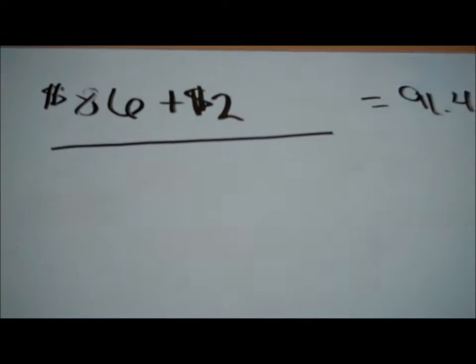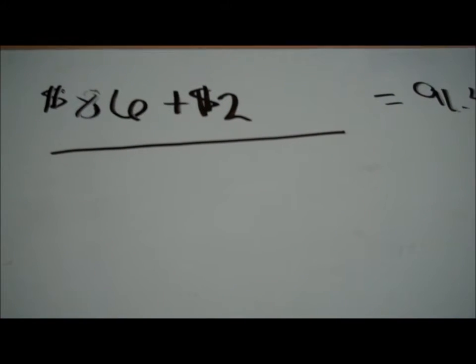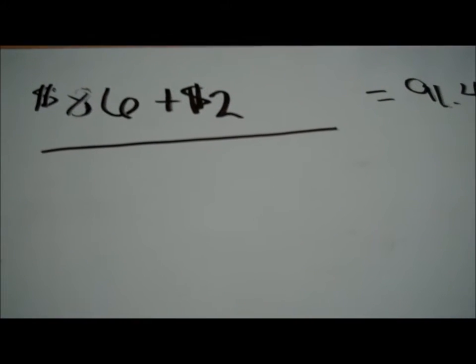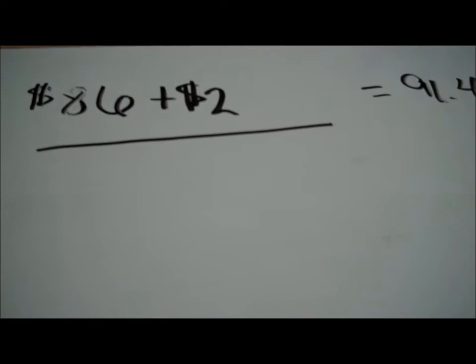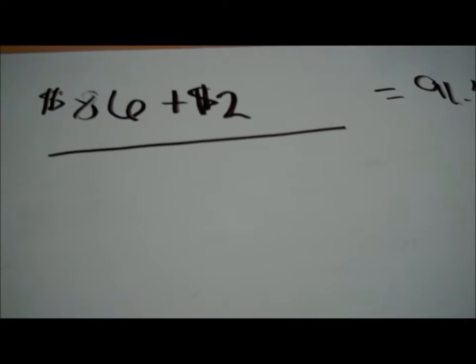It also says that bill included a soft drink for $2, so we have to add on $2 — somebody got thirsty. It says to determine the tax rate for the room, just for the room.